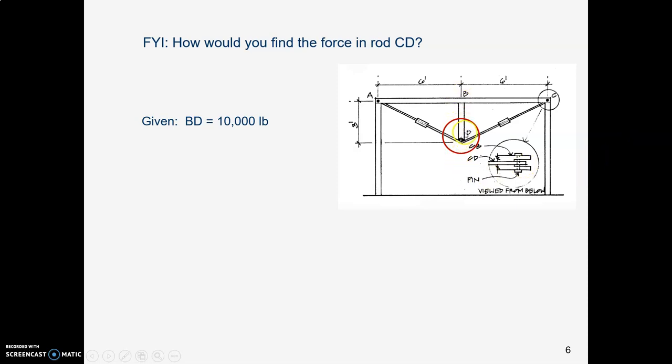He tells you that when these turnbuckles are tightened, it causes BD to push up on this beam with 10,000 pounds of force. So notice how I've made a circle around joint D there. You could draw a free body diagram at D. Get your paper towel tube and just look at joint D. Forget about everything else.